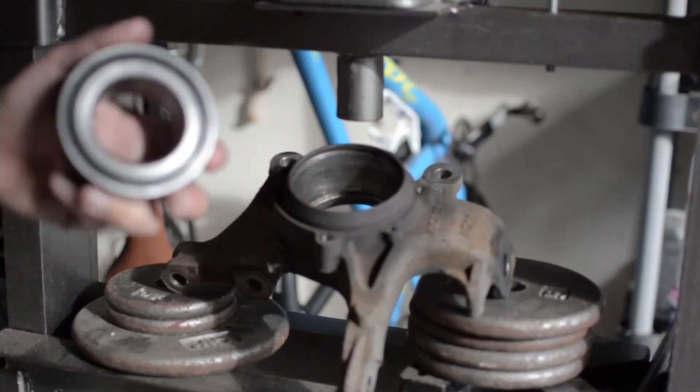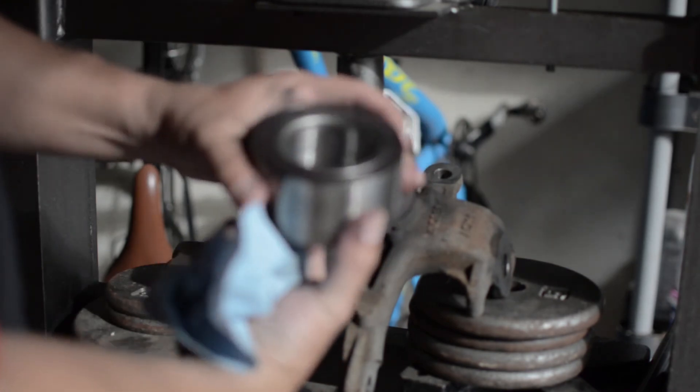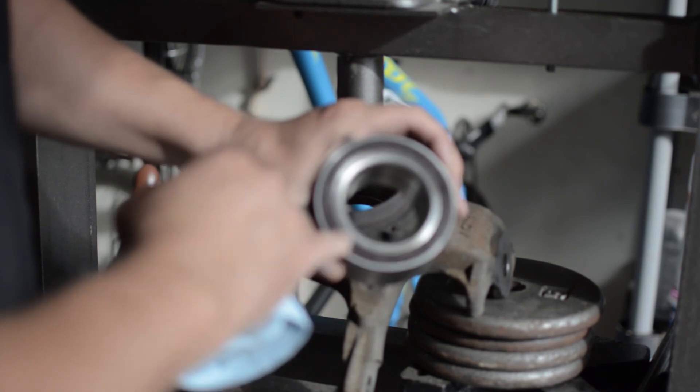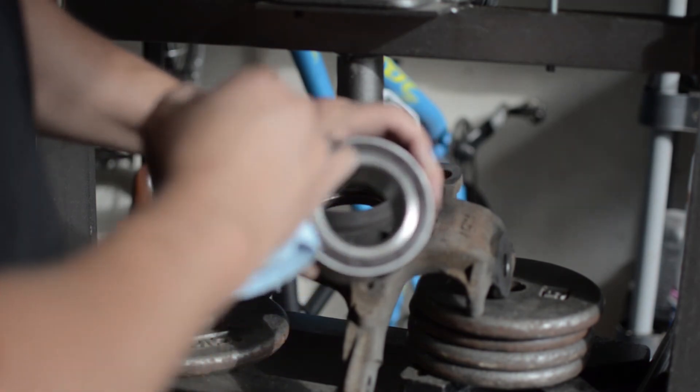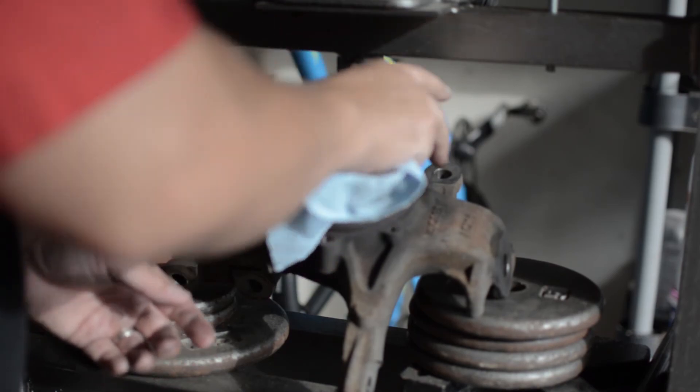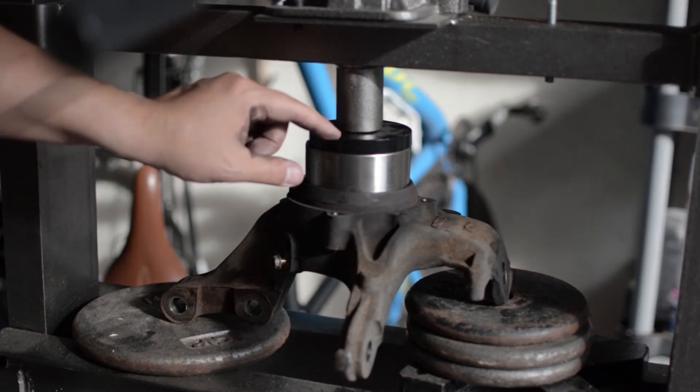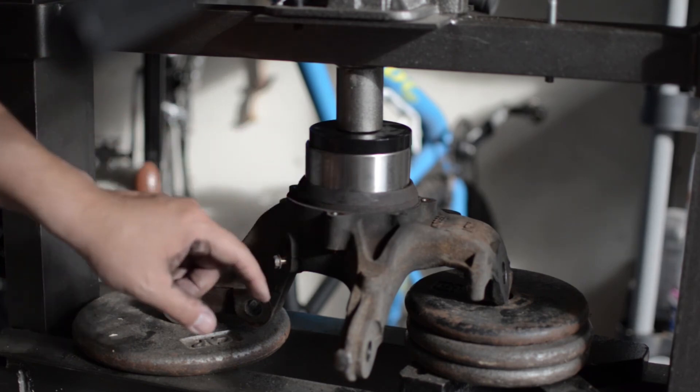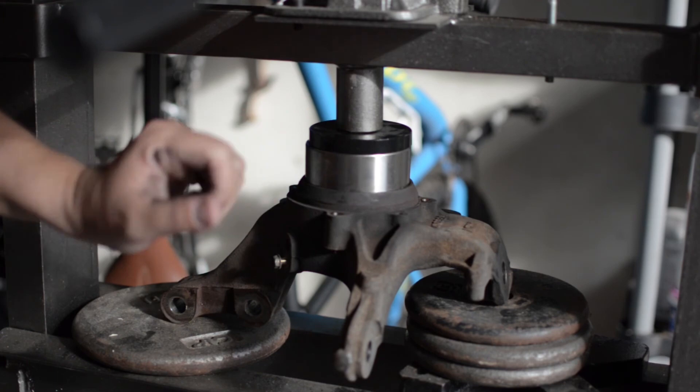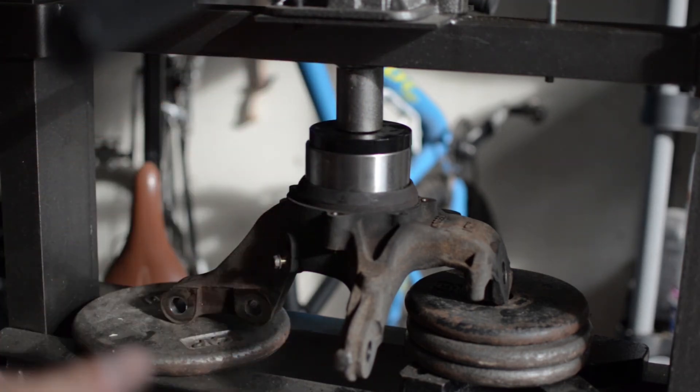Now we're going to install the bearing, and we have to make sure we insert the bearing in the correct way. The ABS sensor side has to go in this direction. I've already installed an adapter that will go perfectly over the bearing, and we have to make sure the bearing is straight in the hub so it can press evenly as much as possible.